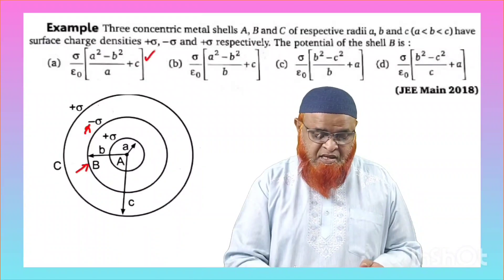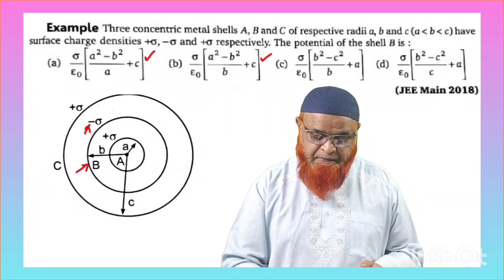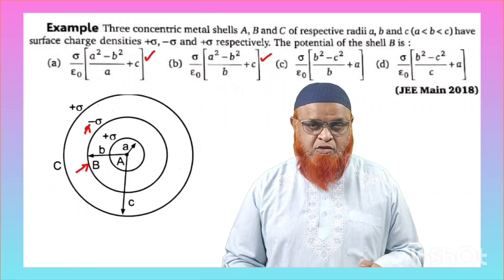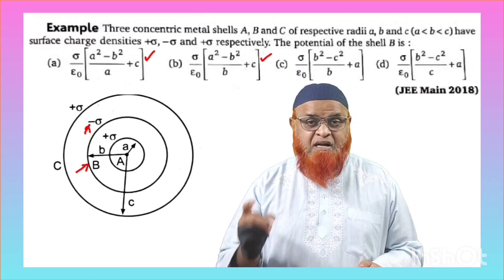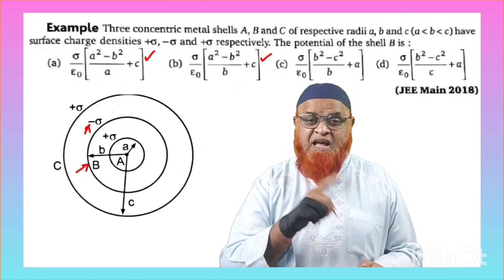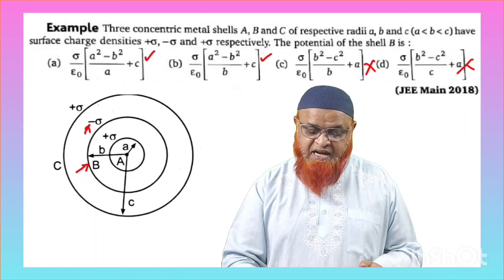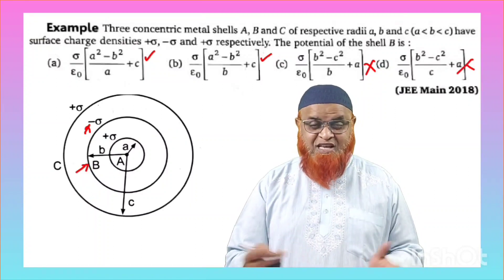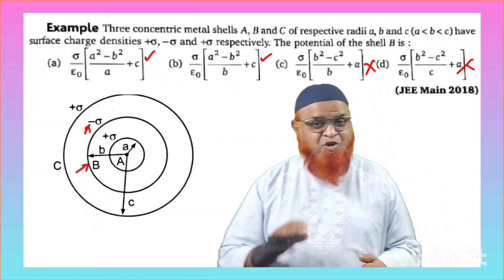If you observe the four options, B is negative in the first option, B is negative in the second option also. But you have to select which is the correct option among A and B. Already C and D is eliminated by using common sense without solving the problem.